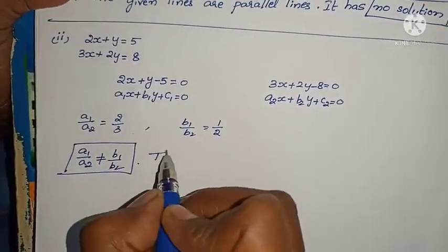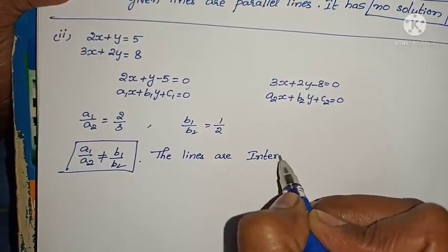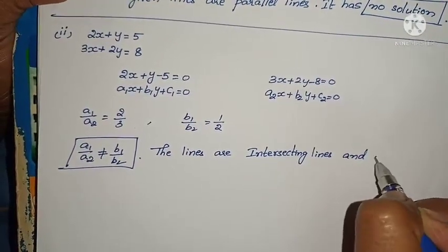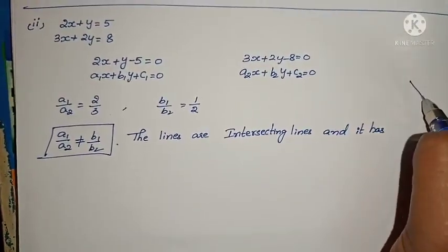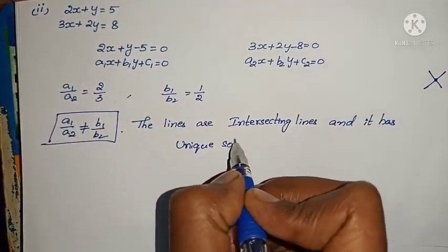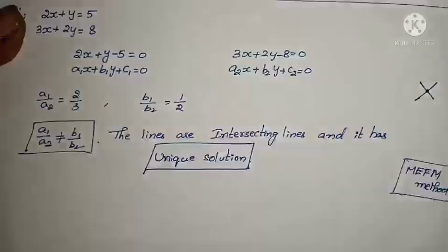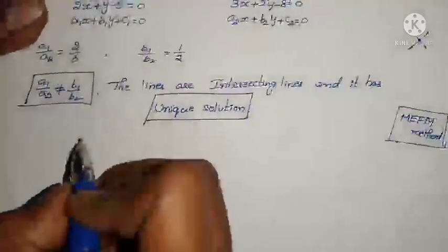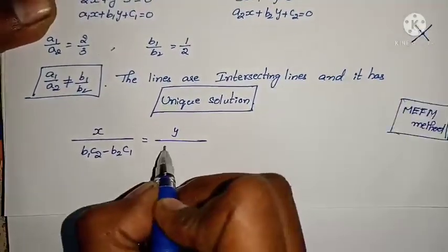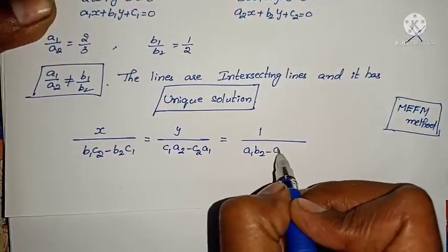Then what we can say? The given lines are intersecting lines. Intersecting lines have a unique solution. If it has a unique solution, then we have to find it by using cross multiplication method. The formula is: x by (B1C2 minus B2C1) equals y by (C1A2 minus C2A1) equals 1 by (A1B2 minus A2B1). This is the formula.